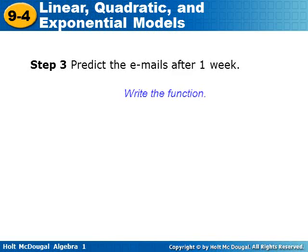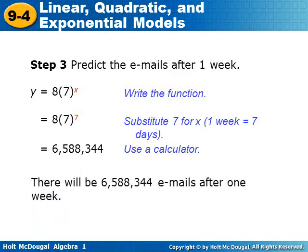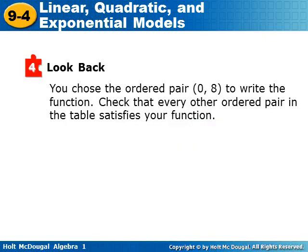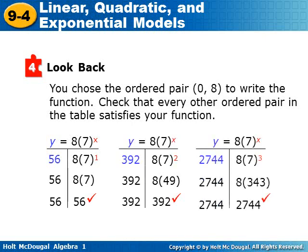Now we predict the number of emails after one week. Using y = 8 · 7^x, we substitute x = 7 (since one week is seven days), giving us 8 × 7⁷. Using a calculator, that's 6,588,344. So there will be 6,588,344 emails after one week. To verify, you can plug in the other ordered pairs from the table into the function and confirm they satisfy the equation — and they do.